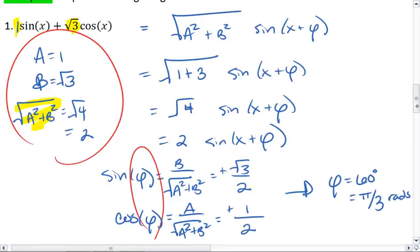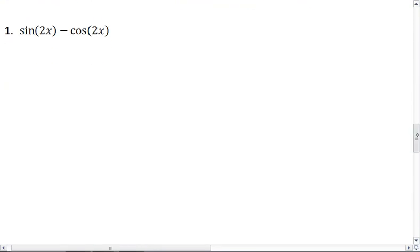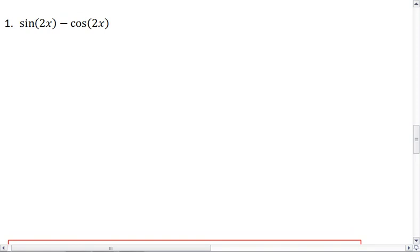Let's try a couple more examples. Make sure that you've really got this down. So try to condense this one into a single sine function. Sine 2x minus cosine of 2x.